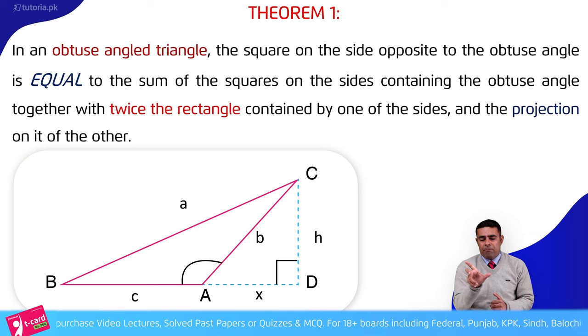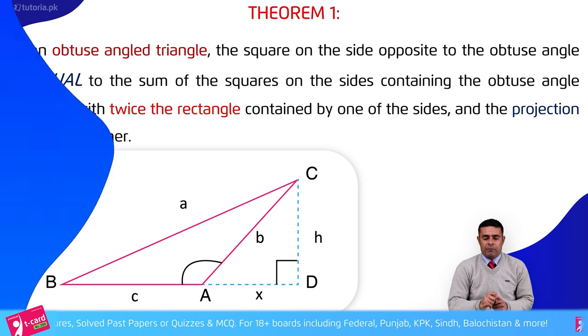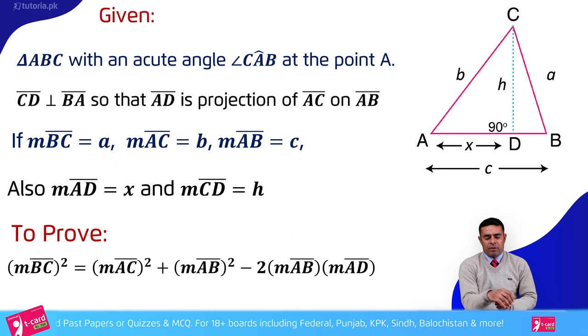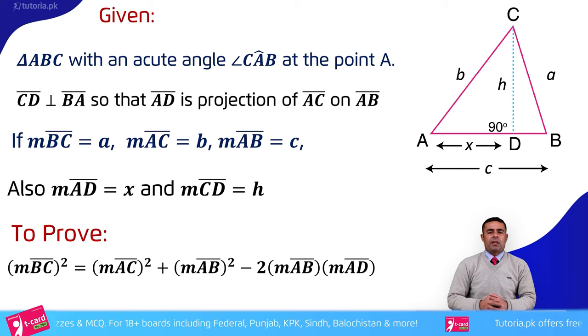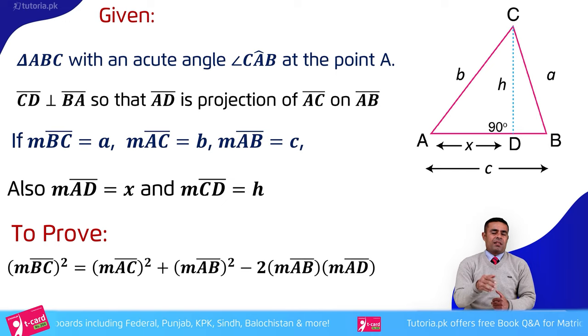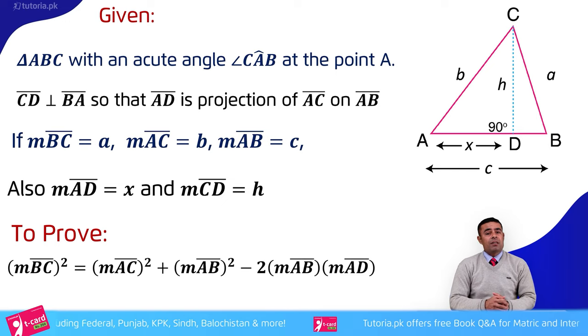The projection of BA will be AD. In terms of the theorem, we have used a word called Dimension. So in terms of this, we have to draw a perpendicular line.